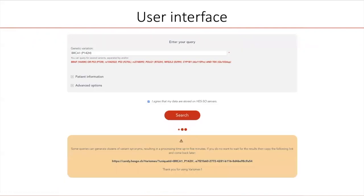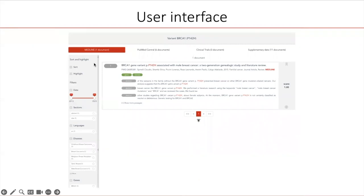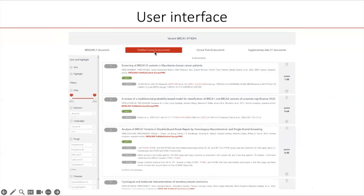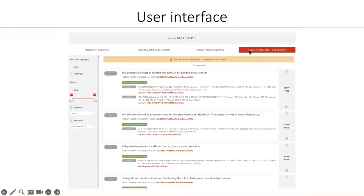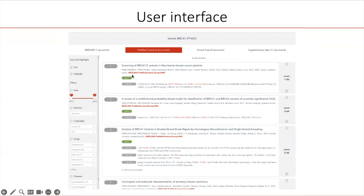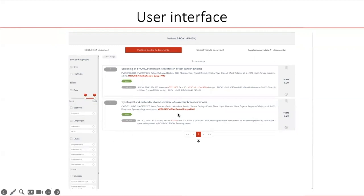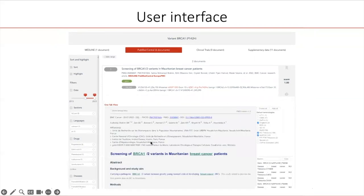The response time of Variome is quite slow, so we provide a link in order to come back later to see the results. The results are displayed by collection and each collection is displayed in a different tab. In this case, we found one document in Medline, six documents in PubMed Central, no documents in clinical trials, and 11 documents in the supplementary material. On the left, there are some options to customize the display, such as the selection of entities to highlight or facets to filter the result sets. For each document, a few passages containing the variants are displayed and the full document is also accessible with highlighted annotations. Finally, documents can be flagged by the user in order to export the set of documents considered interesting. The export can be done in CSV or in JSON.